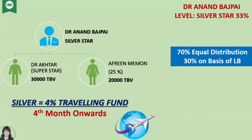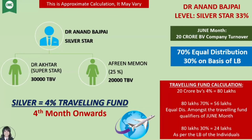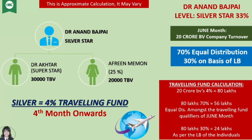You have break silver and I have maintained three months. Now what will happen? I have written a point on this — this is an approximate calculation. It may vary. This is a long-term calculation, and it can vary from the company turnover. Now there is a result of silver. His name is Dr. Anand Bajpayee — that is a result of silver. He broke the silver and maintained it. They will start the fund in the fourth month. So how will the fund be calculated? We will understand that.